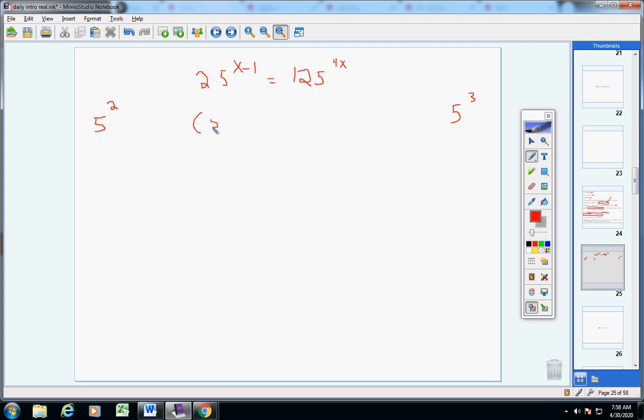So, in place of 25, put 5 squared. And on the outside, you still have x minus 1. And over here, in place of 125, you can put 5 to the third power like this. And you still have 4x on the outside. Now, take this here and multiply it times the exponent on the inside. And you get 2 times x is 2x. And 2 times negative 1 is negative 2, okay?